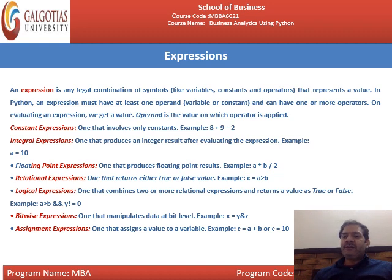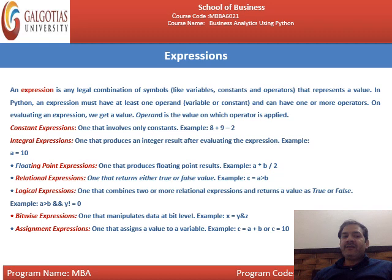An integral expression is like A = 10, where 10 is an integer stored in variable A. A floating point expression produces floating point results — for example, A * B / 2. If A = 1 and B = 2, multiplication gives 2 / 2 = 1.0; if B = 3, the result is 3 / 2 = 1.5. A relational expression returns either true or false — for example, C = A > B. If A is greater than B, it returns true; otherwise false. We have already discussed logical expressions, bitwise expressions, and assignment expressions.